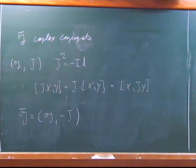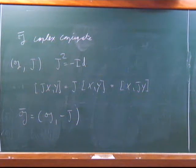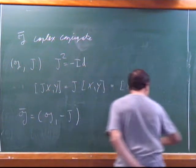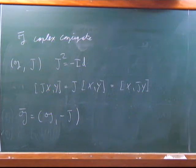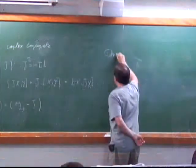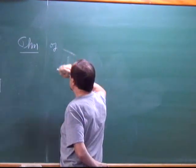If I take the direct sum of G with J and G-bar with minus J, I get the complexification. The proof is a little bit tricky but not hard. If G is complex, I can forget about the complex structure — look at it as a real Lie algebra of twice the dimension. Then I complexify again and get a complex Lie algebra of twice the dimension of G, isomorphic to G plus G-bar.